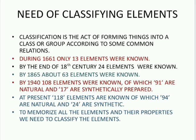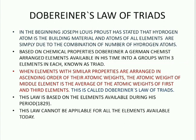This is the need to classify elements, and because of this, scientists have been working vigorously to classify the elements, and at last the modern periodic table was given. Now let us enter into the early attempts made by different scientists. Dobereiner's Law of Triads. German chemist Dobereiner arranged the elements available in his time into groups with three elements each. He noticed that when elements with similar properties are arranged in ascending order of their atomic weights, the atomic weight of the middle element is the average of the atomic weights of the first and third elements.